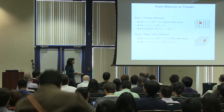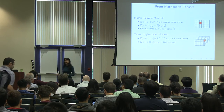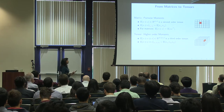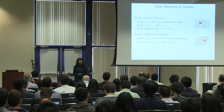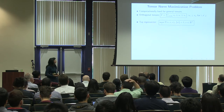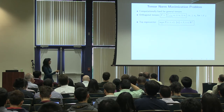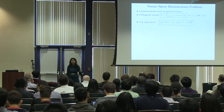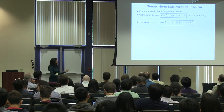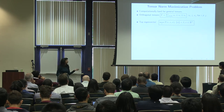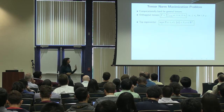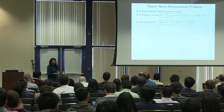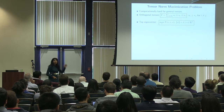Going beyond matrices to tensors, we can ask: if I have a tensor, can I find its decomposition in terms of its rank-one components? What do the algorithms and the optimization landscape look like? We can write down the same problem: we have a tensor and we look at its cubic form — extending the quadratic form of the matrix. You can ask: can you find the direction that maximizes the cubic form? This is again a non-convex optimization. For general tensors, this is very hard to analyze.